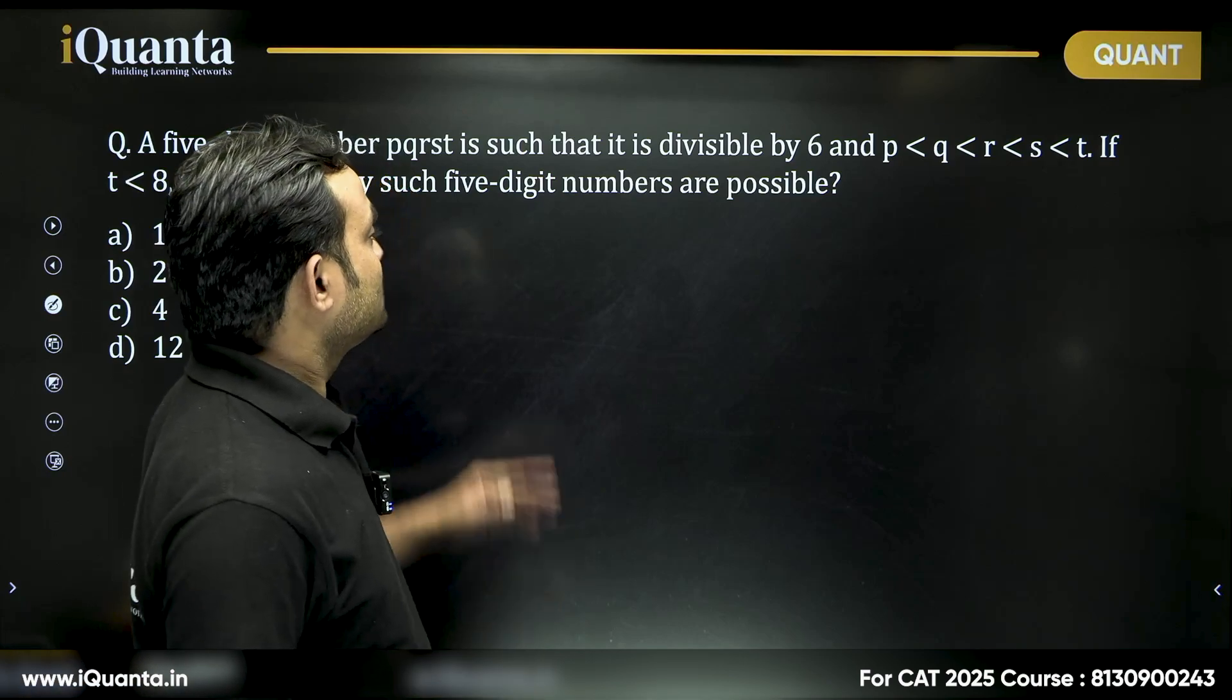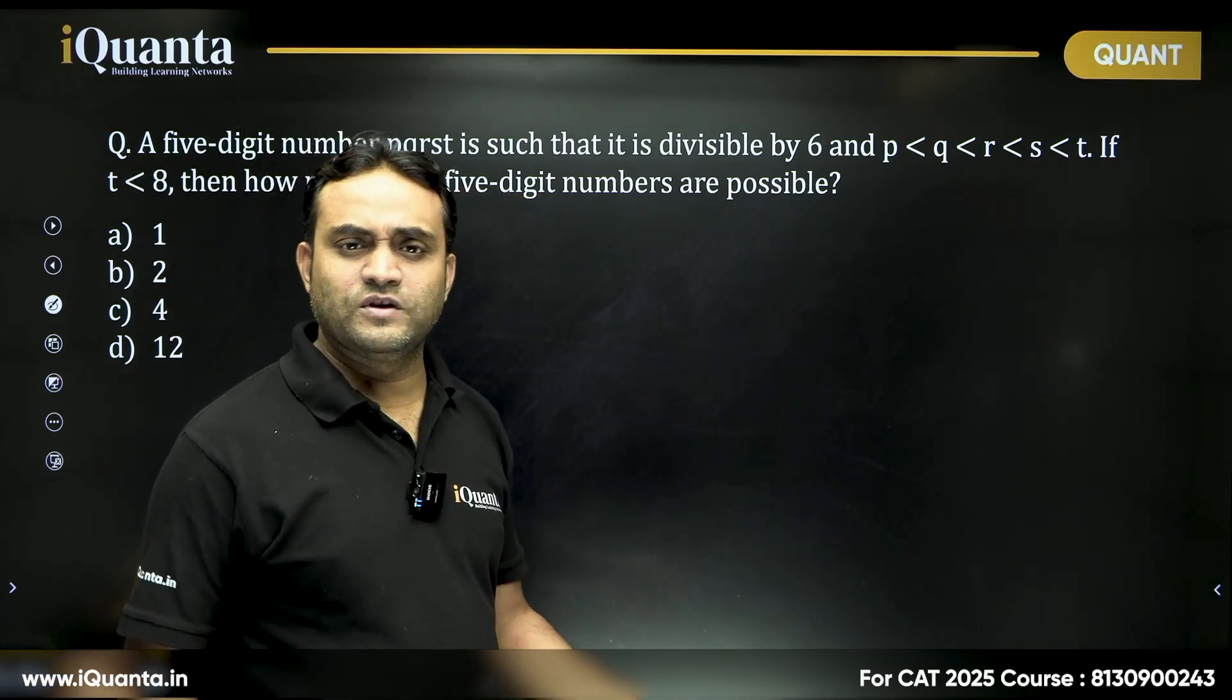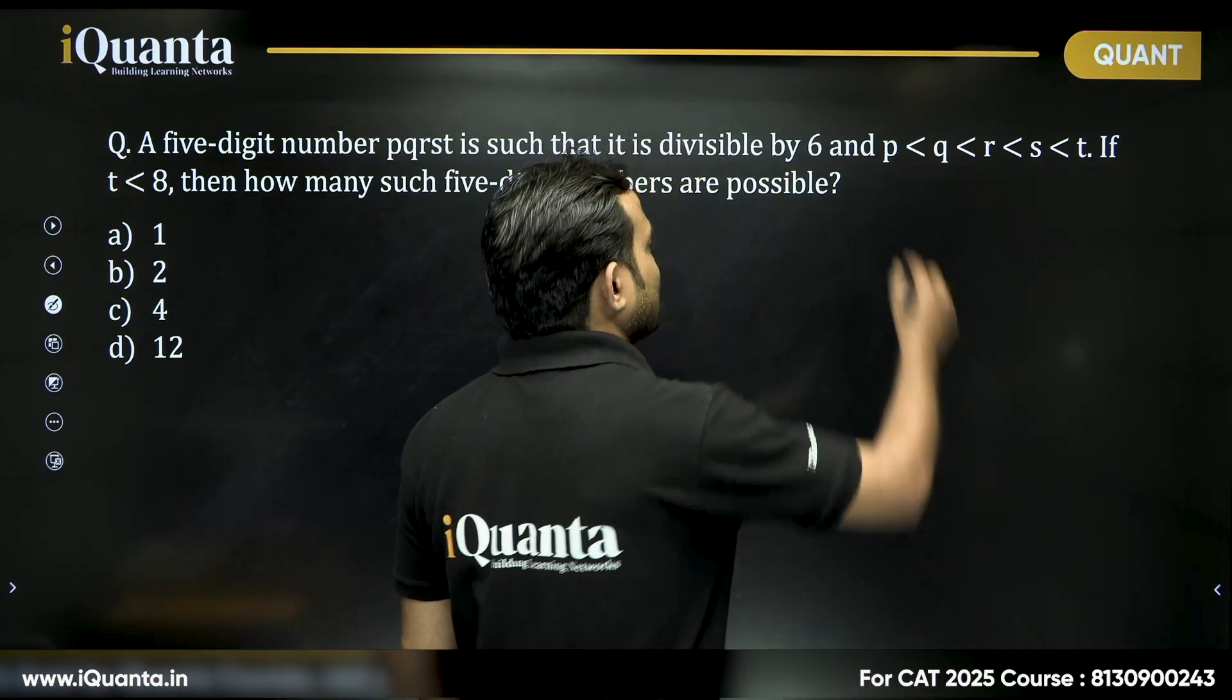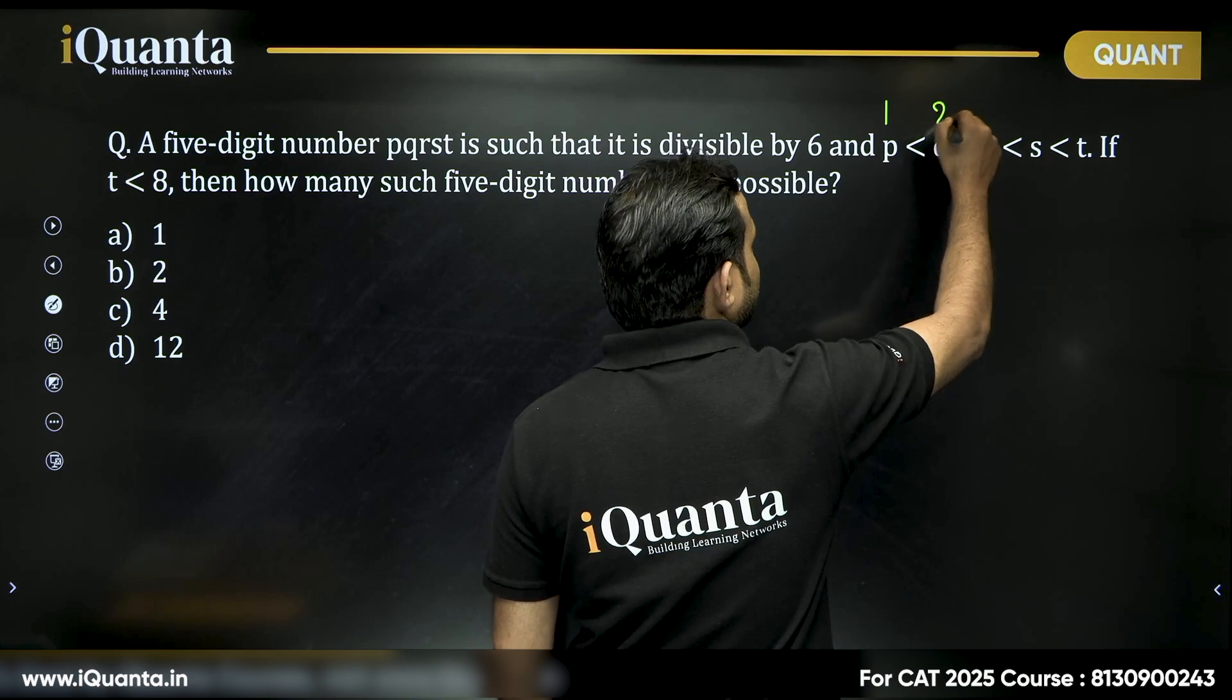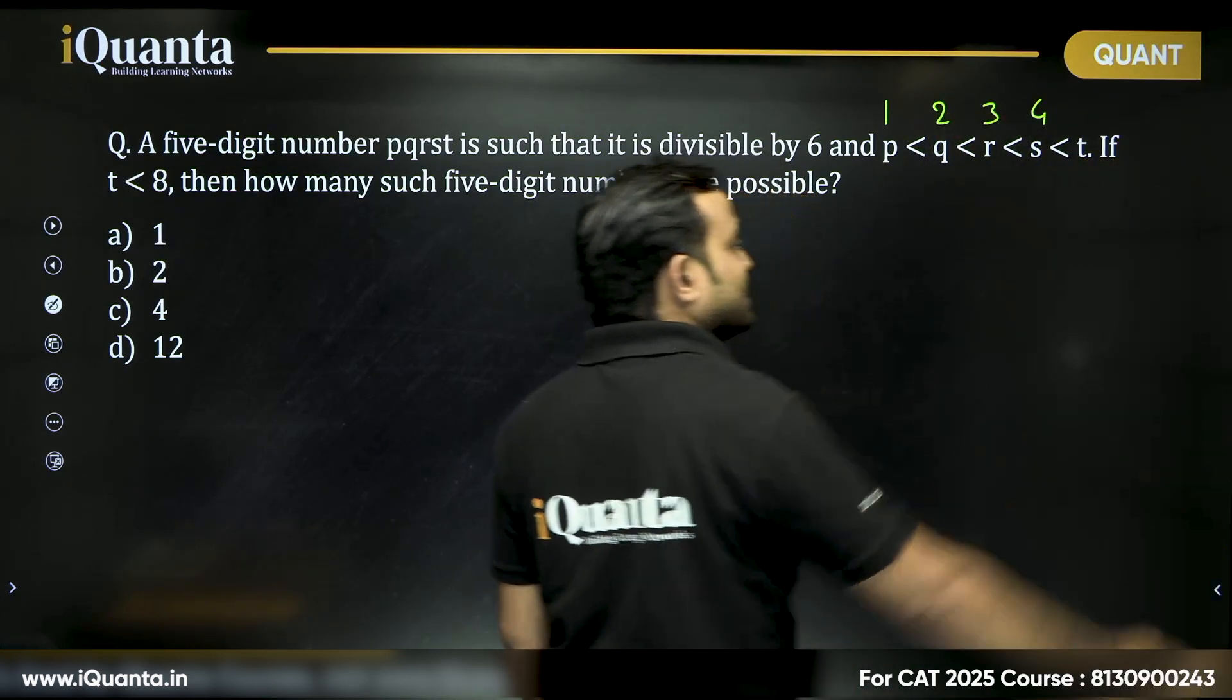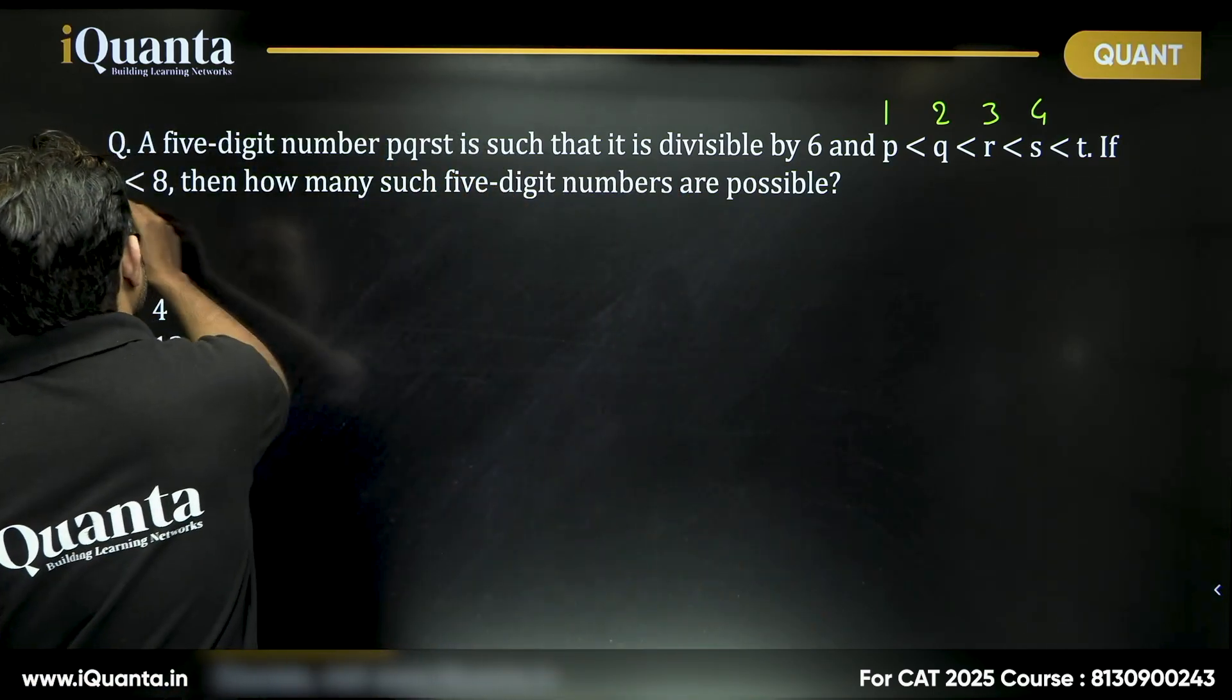Now, what do we know? As this is a five digit number, P, Q, R, S, T, all of them will be single digit numbers. Now, P cannot be 0, P can be at least 1, then Q can be at least 2, R can be at least 3, S can be at least 4, then T can be 5, 6 or 7 because T is less than 8.